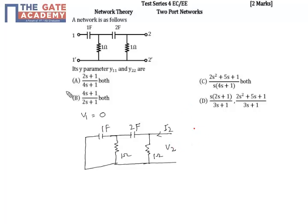Now we have to find y22. y22 is equal to i2 by v2 when v1 is equal to 0. Now, what we have to do is, same like the previous case,